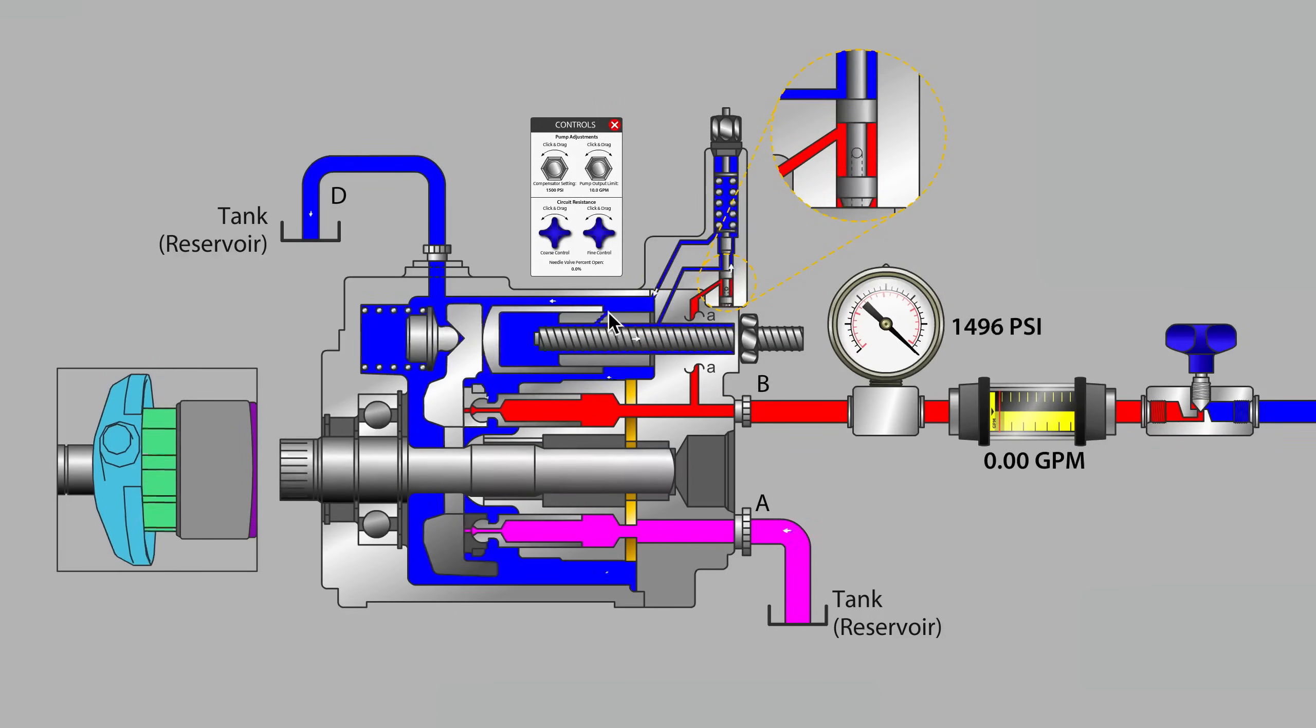To limit the travel of the swash plate once we reach the zero point, quite often a bleed orifice is present on a tube where the control piston is sliding back and forth. So that's another clearance inside the pump where case drain flow originates from.